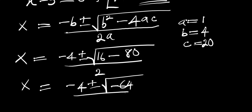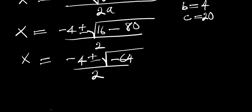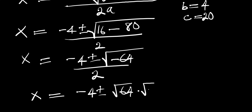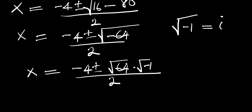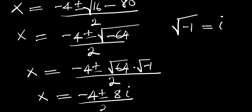We can write this as negative 4 plus or minus the square root of 64 times the square root of negative 1, divided by 2. The square root of negative 1 equals i, so we replace it with i. We have x equals negative 4 plus or minus 8i, divided by 2.